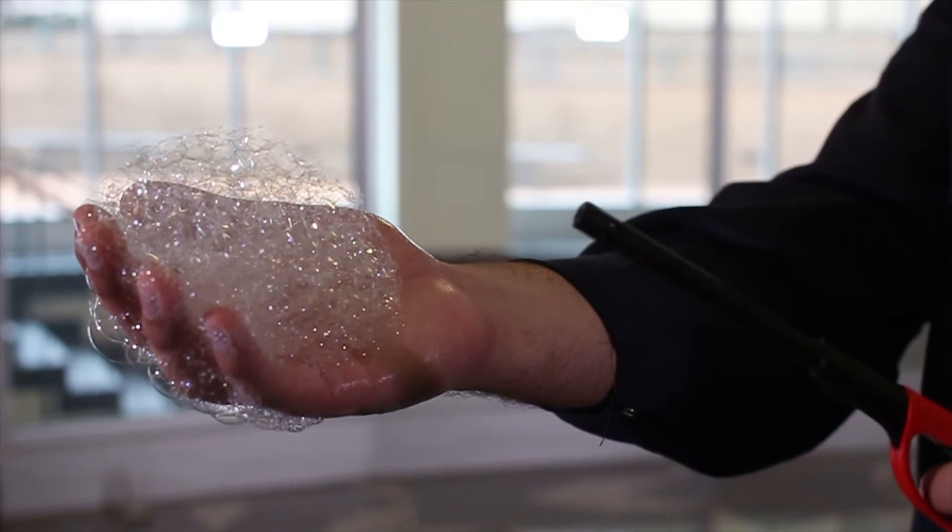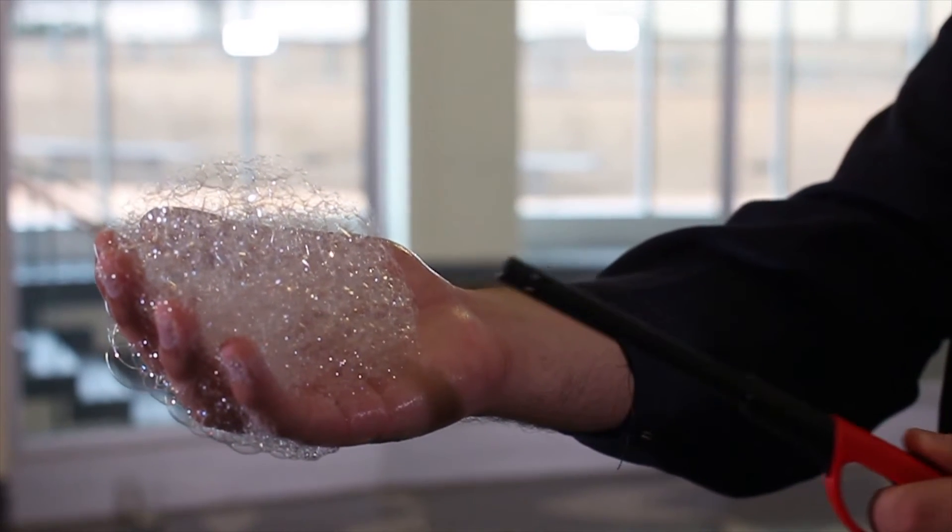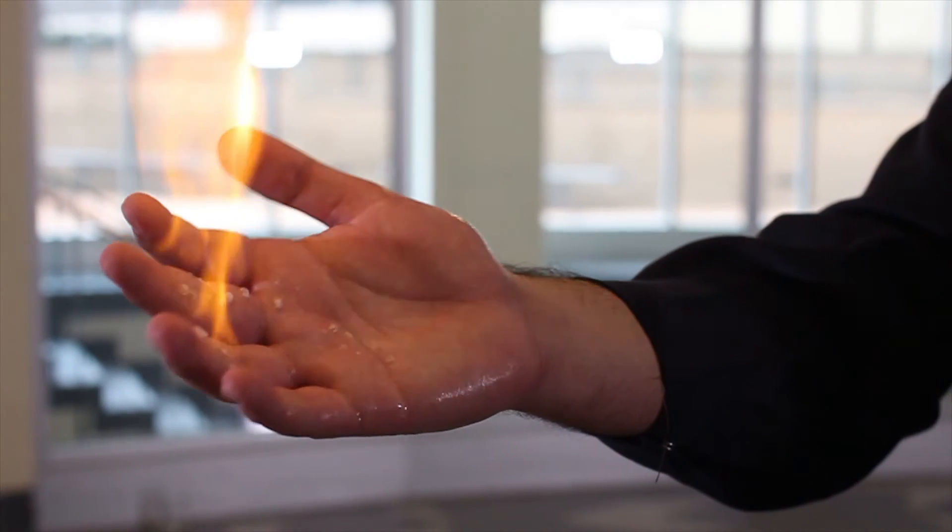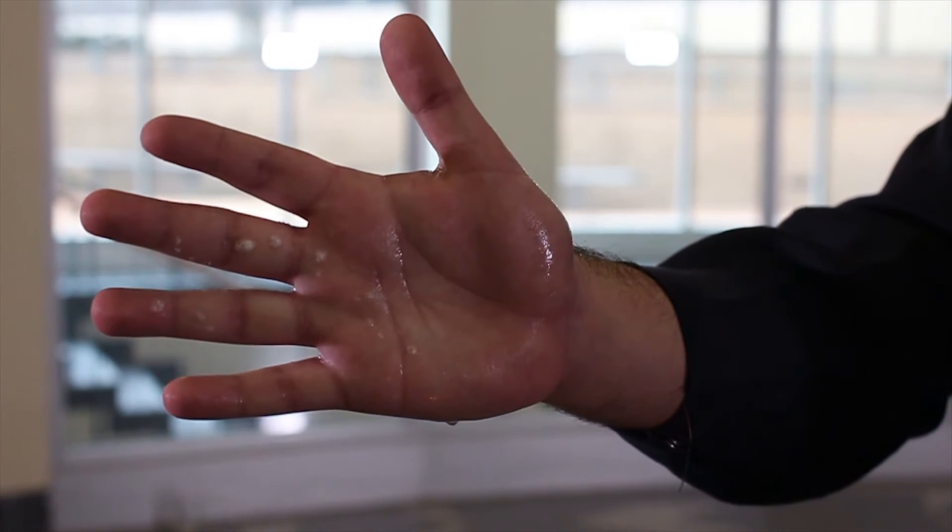When the fire was lit, the water on the hand was vaporized, thus creating a layer of steam that protected the hand for a split second. That split second is long enough to prevent any harm to their hand.